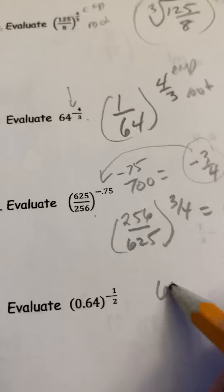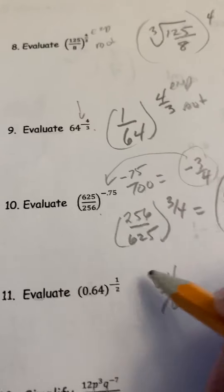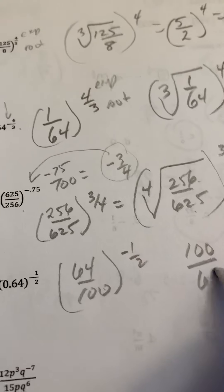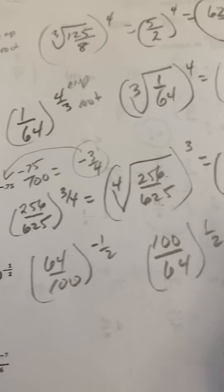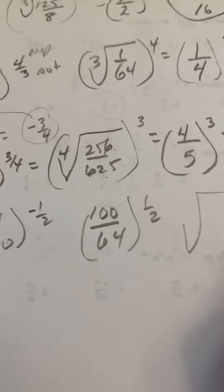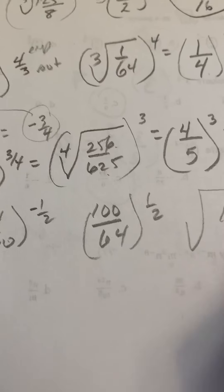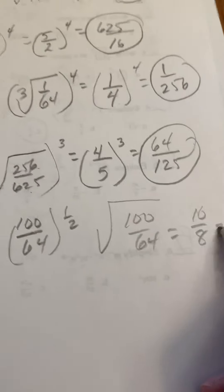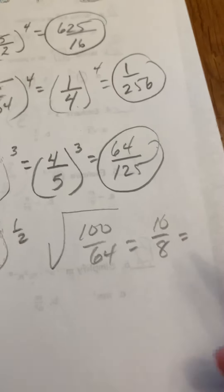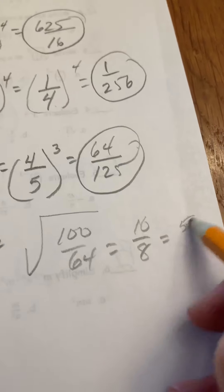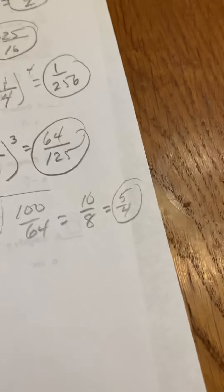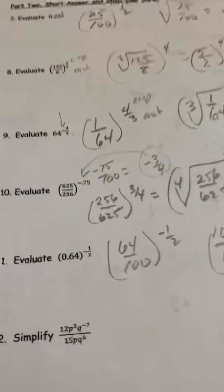We're halfway there — now we cube it. Four cubed is 64 and five cubed is 125. Now we have 64 over 100 raised to the negative one half, so we flip it: the reciprocal of the base to the one half. We find the square root of 100 over 64, which is 10 over 8. You can't leave it like that, so that simplifies to five quarters, or 1 and a quarter.